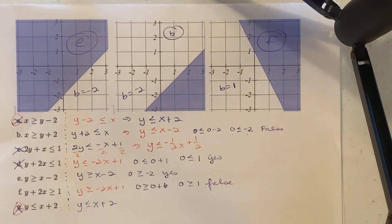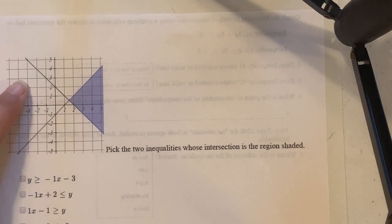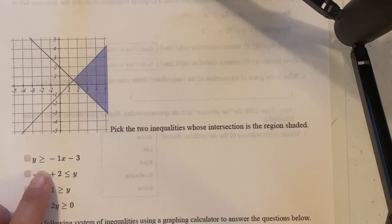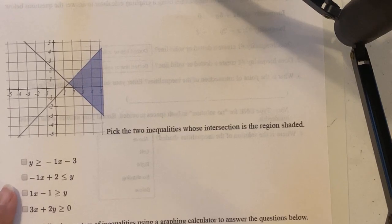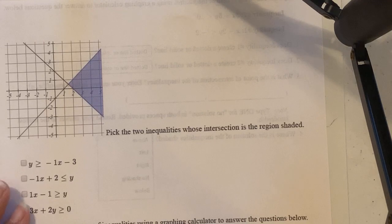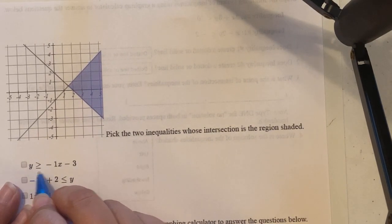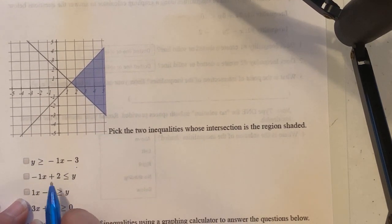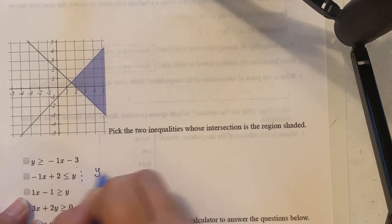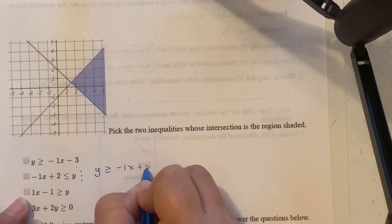Moving on to the next example. They gave us a graph with two equations graphed at the same time, and they want us to pick the two inequalities whose intersection is the shaded region. We rewrite each equation in y equals mx plus b form. The first is already in that form. The second is a mirror image: y is less than or equal to negative 1x plus 2.